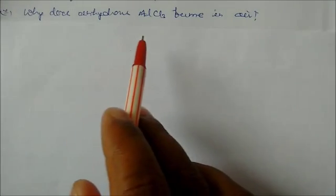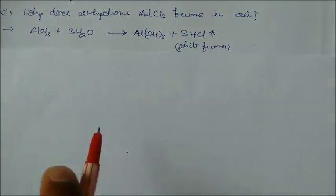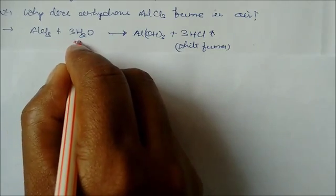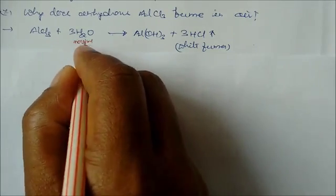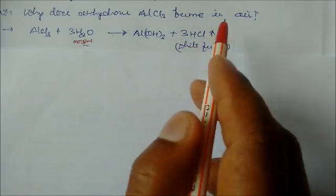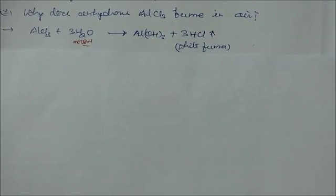Why does anhydrous AlCl3 fume in the air? It reacts with moisture in the air. When it exchanges with the moisture, it gives fumes like HCl. HCl produces white fumes and aluminum hydroxide. This fume is visible in the air.